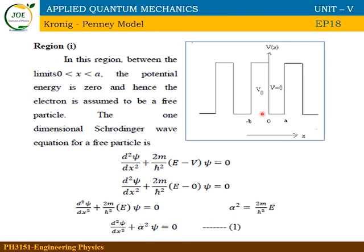The electron travels through two regions. The first region is 0 to a, where the electron travels in free space with V = 0. The time-independent wave equation in this region is: d²ψ/dx² + (2m/ħ²)(E − V)ψ = 0. With V = 0, defining α² = 2mE/ħ², this simplifies to d²ψ/dx² + α²ψ = 0. This is equation number 1 for region 1.